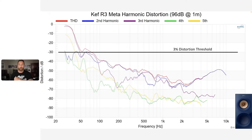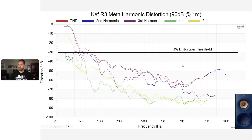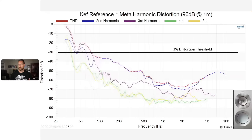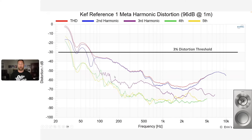At 96 dB at one meter, distortion looks good until about 80 Hz — below 3%, which is fine for a bookshelf speaker. Looking at the Reference 1 Meta, it's similar overall, but the Reference 1 Meta has lower distortion in the mid-upper frequency range. There's also more separation in the third-order distortion — if you really care about harmonic distortion, lower odd-order distortion is a good thing to have.